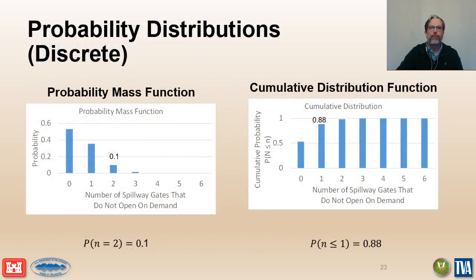We use probability distributions to summarize and visualize the possible values of a random variable along with their corresponding probabilities. Discrete random variables are portrayed using either a probability mass function or a cumulative distribution function. The probability mass function tells us the probability of a specific value of the random variable. The cumulative distribution function tells us the probability that the value of the variable is less than or equal to a particular value.